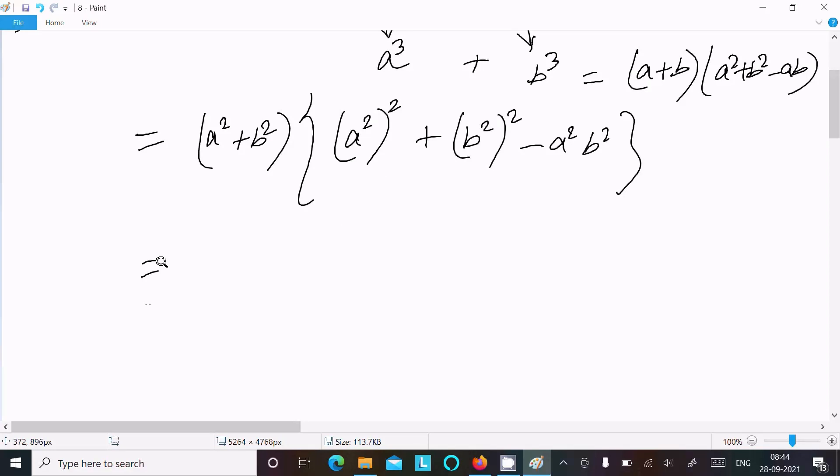After doing this, here we can write (a^2 + b^2), this here 2 into 2, that is 4, a power 4, and here b power 4 minus a^2 b^2. So this is the final factorization of this polynomial.